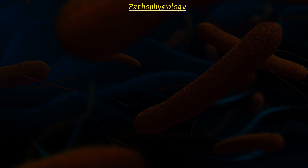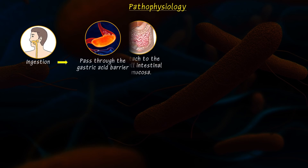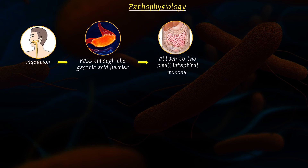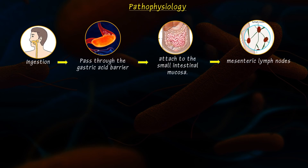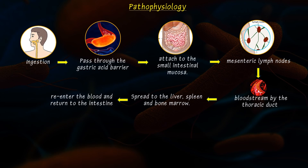The next point is pathogenesis. After ingestion, Salmonella passes through the gastric acid barrier and attaches to the small intestinal mucosa. By penetrating the mucosa, bacteria reach the mesenteric lymph nodes and multiply there. Then bacteria enter the bloodstream via the thoracic duct, and through the bloodstream, they spread to the liver, spleen, and bone marrow.